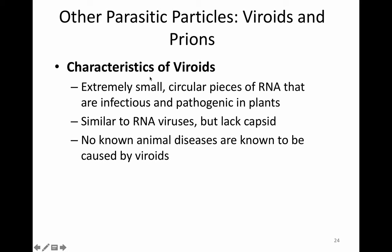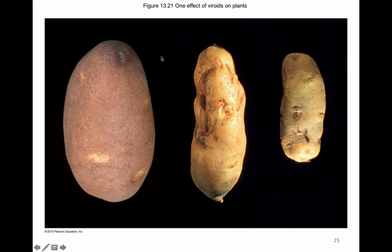The next acellular infectious particle is viroids. Viroids are extremely small circular pieces of RNA that are only known to be infectious in plants. It's possible that there are viroids that infect humans, but we just don't know. These are only RNA — there is no capsid and no envelope surrounding the RNA, so they're similar to an RNA virus but lack the capsid. They're significant because plants that can be infected include potato plants. Here we see a normal healthy potato compared to potatoes infected by viroid disease, which causes a reduced storage of starch in the potato. They're still edible, but the farmer experiences a reduced yield.